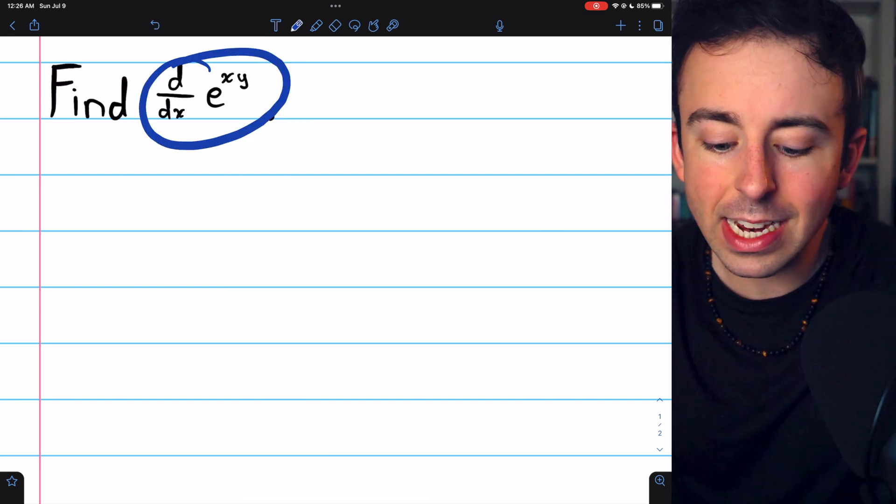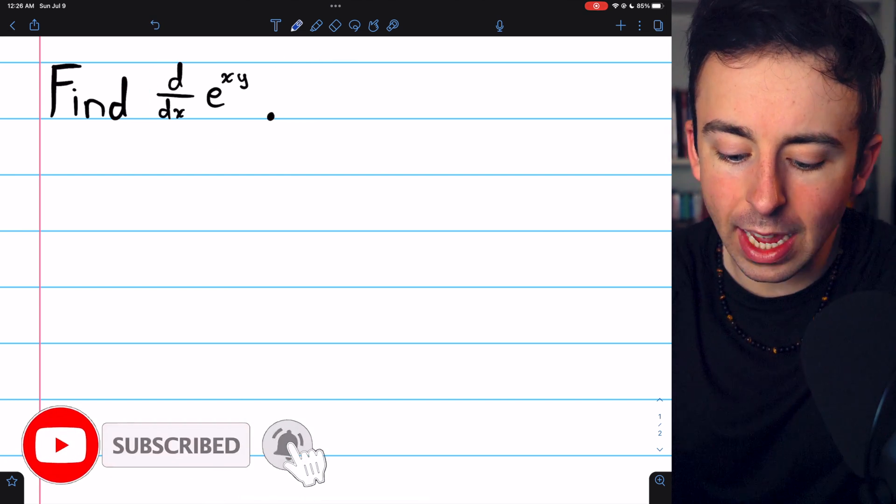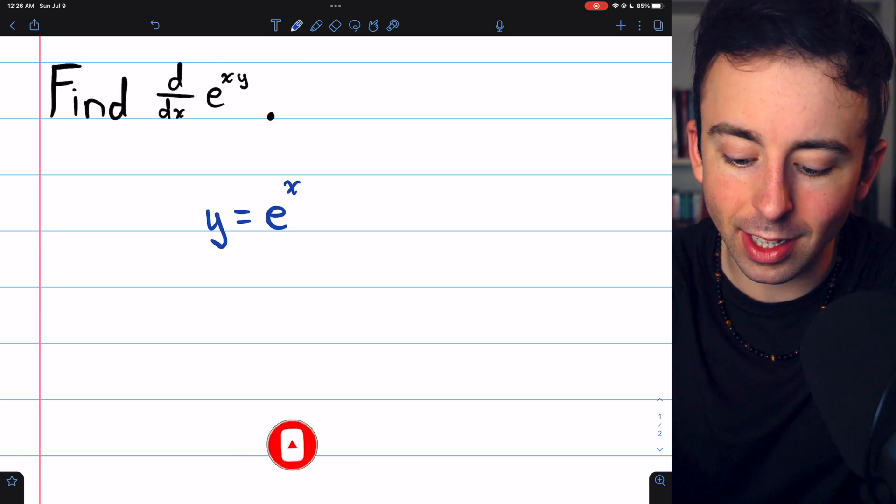Let's find the derivative of e to the xy using implicit differentiation. To begin, we'll write the equation y equals e to the xy.